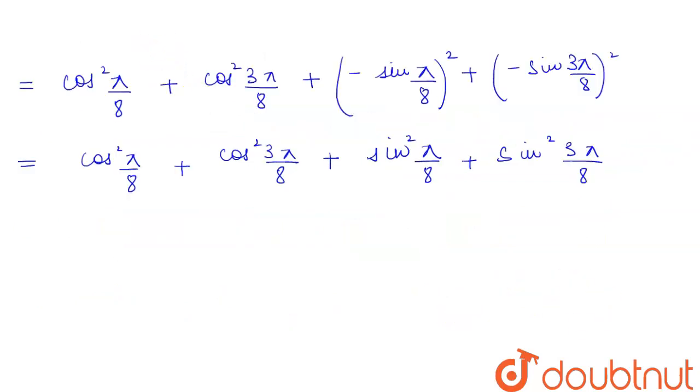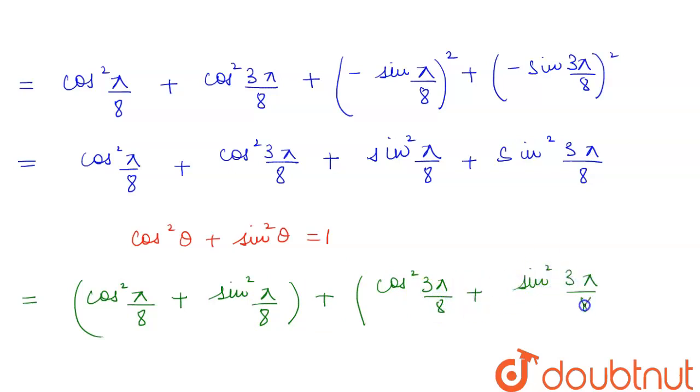Now, why we did this is because we have an identity of cos square theta plus sin square theta which is equal to 1. We see that here there are two pairs forming. This will be equal to cos square pi by 8 plus sin square pi by 8 and plus of the other pair is cos square 3 pi by 8 plus sin square 3 pi by 8.